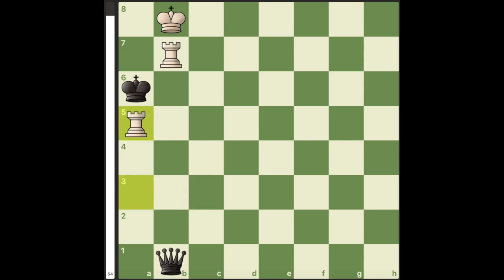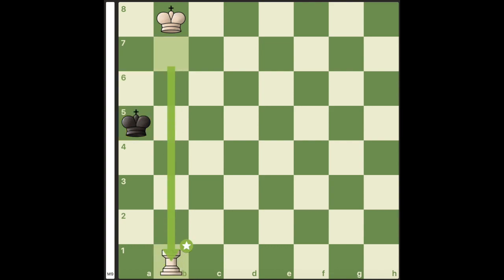Rook a5 forced, Rook takes a5, and we just win the queen. So this is going to be losing for Black.